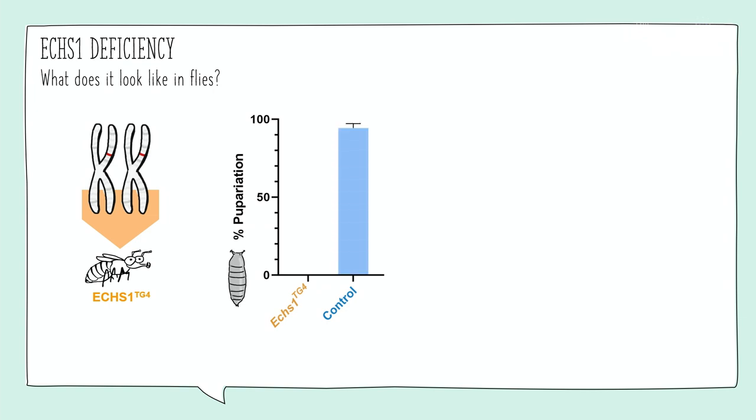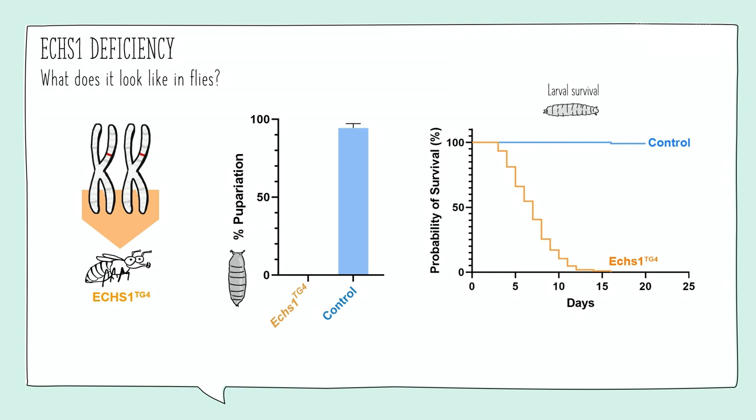And I found that, no, they do not make it to pupation and die during larval development. So when does this occur? So I recorded their survival and saw that about half of the flies, all these larvae, live for about six to seven days. So what I want to know now is, can I improve this with making changes to the diet?